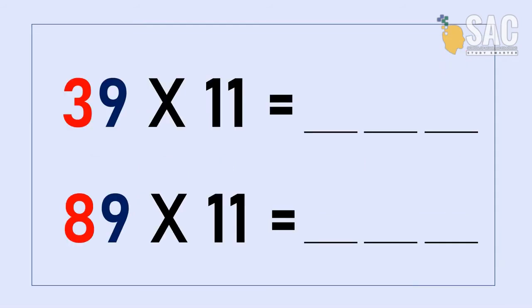Let's have a go with these two examples. 39 times by 11. First one is 3, last number is 9, middle one is 12, so we have to change 3 to 4, then the middle one will be 2. So the answer will be 429.